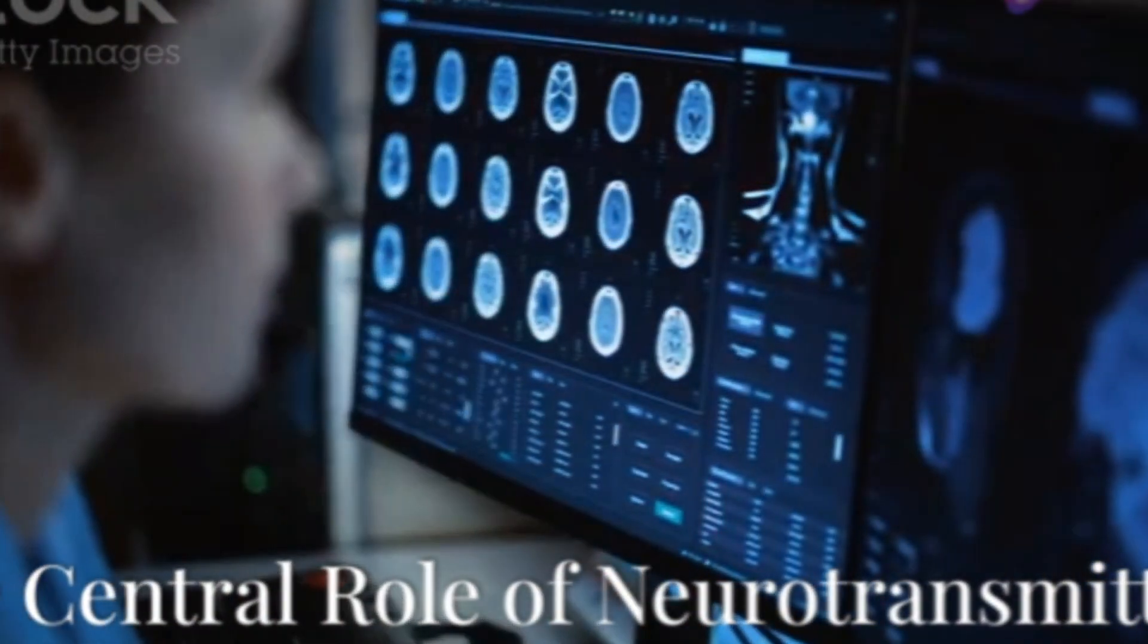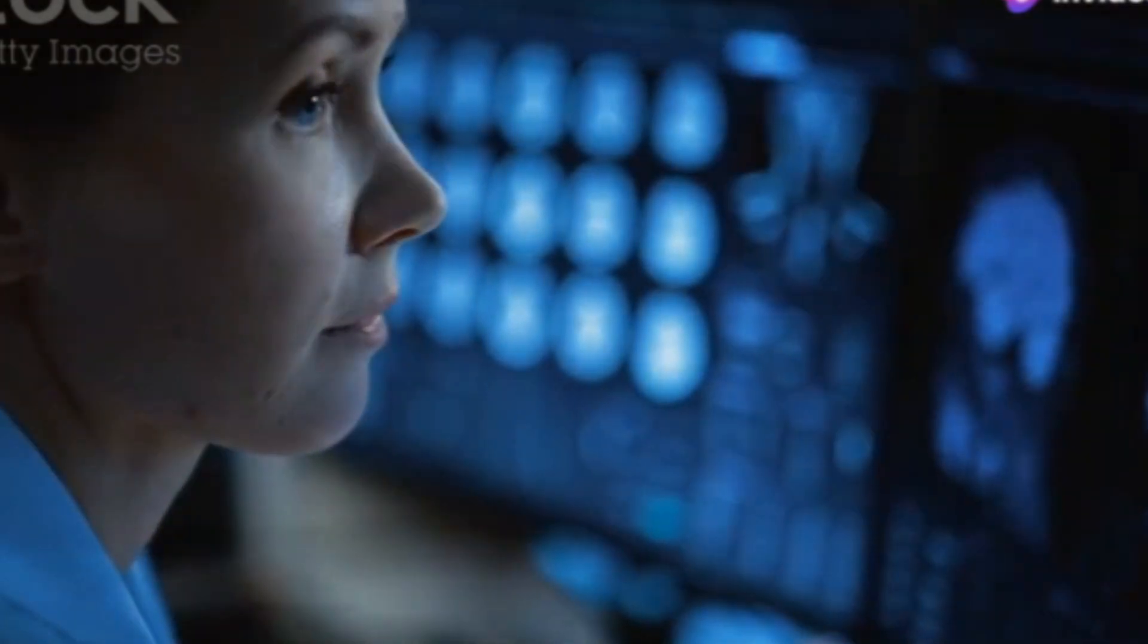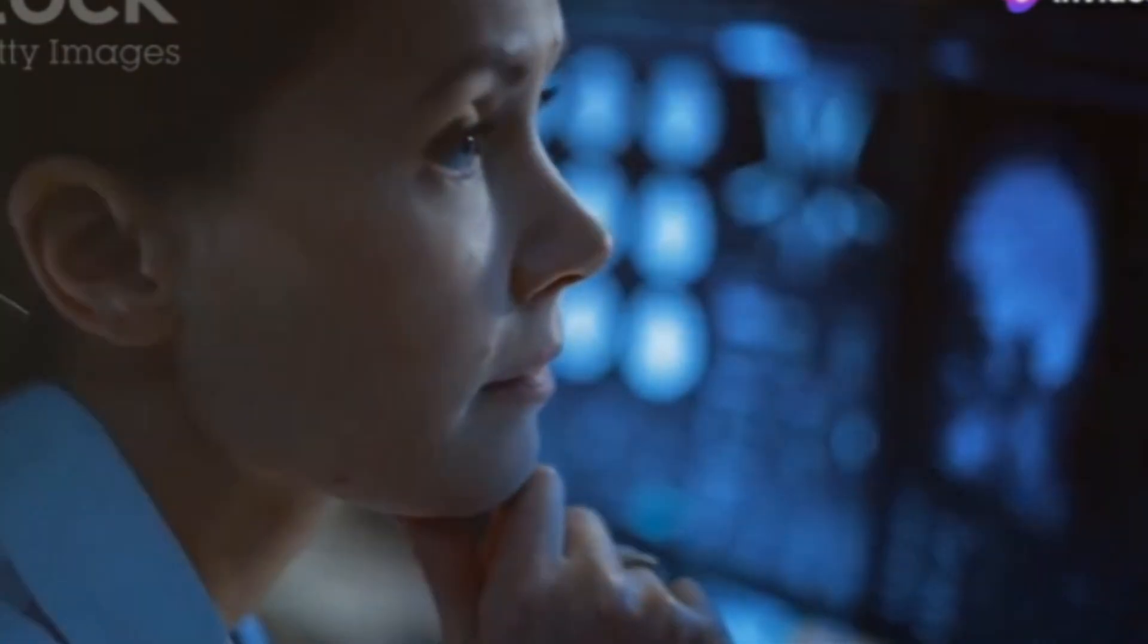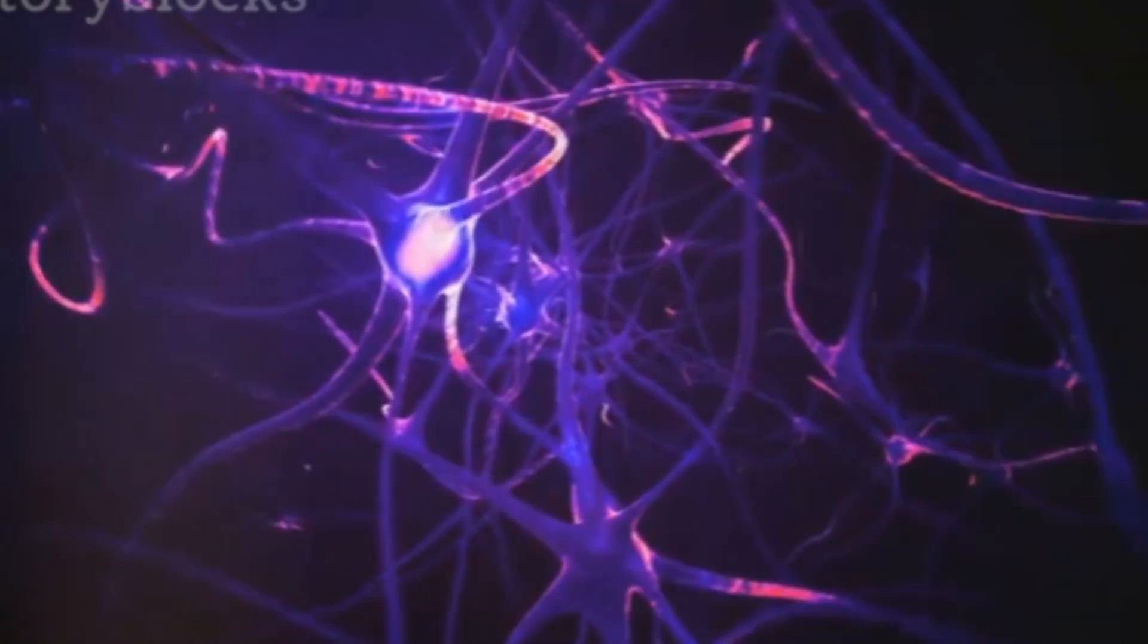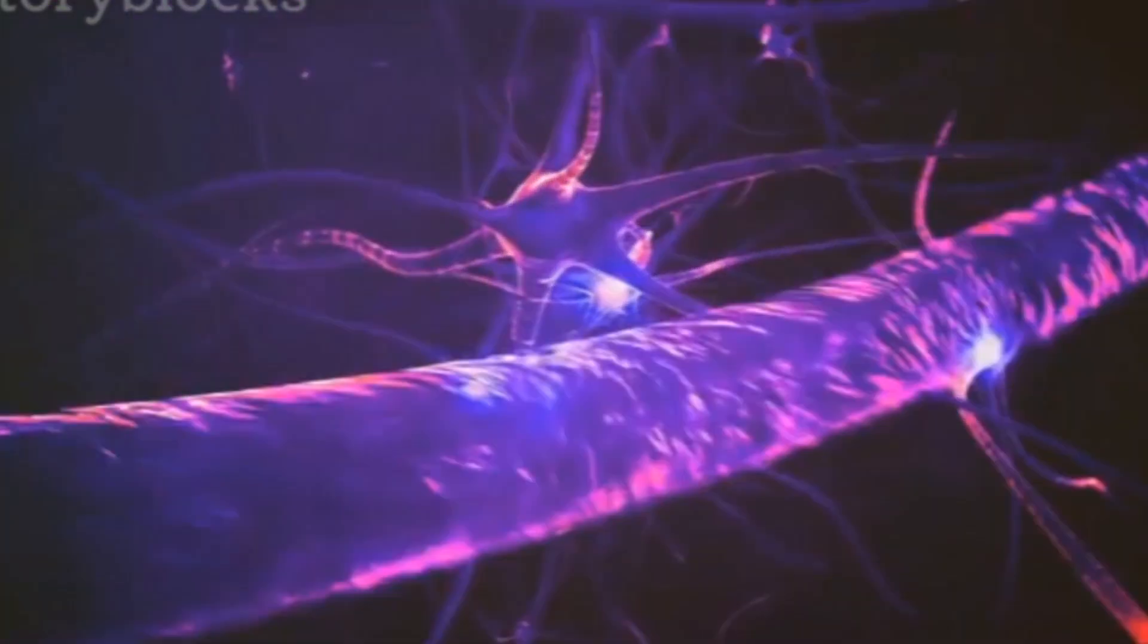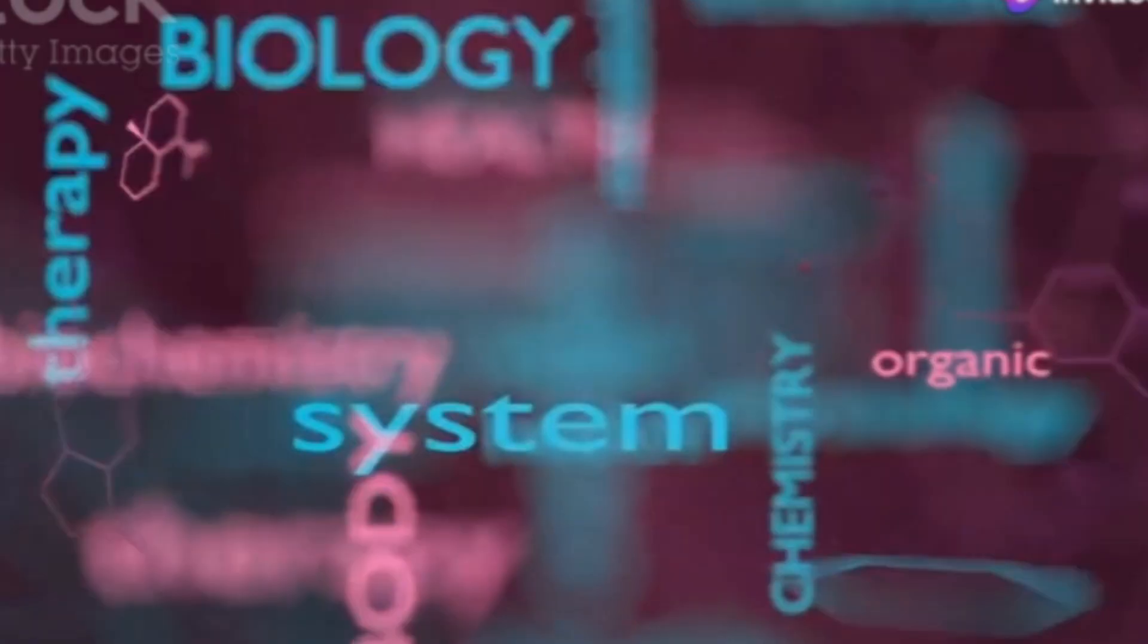Neurotransmitters are the brain's communication system. They transmit signals, regulate functions, and maintain balance. Each neurotransmitter has a unique role, from dopamine's pleasure and reward to serotonin's mood regulation. Understanding neurotransmitters helps us comprehend brain function.